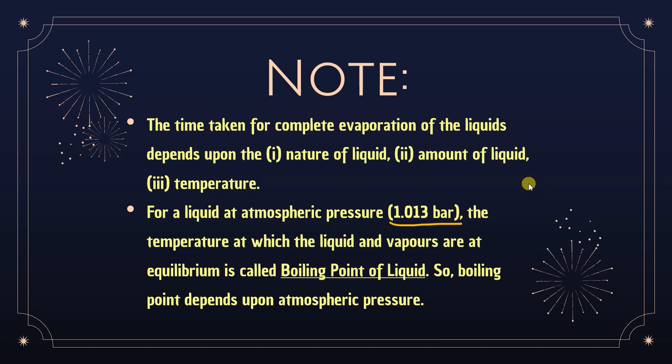The temperature at which liquid and vapor are at equilibrium is called the boiling point. The boiling point is the temperature where the vapor pressure of the liquid becomes equal to the atmospheric pressure. Boiling point depends on atmospheric pressure — lower atmospheric pressure means lower boiling point. That is why in hilly areas the boiling point of water is lower and cooking takes longer, which is why a pressure cooker is necessary.